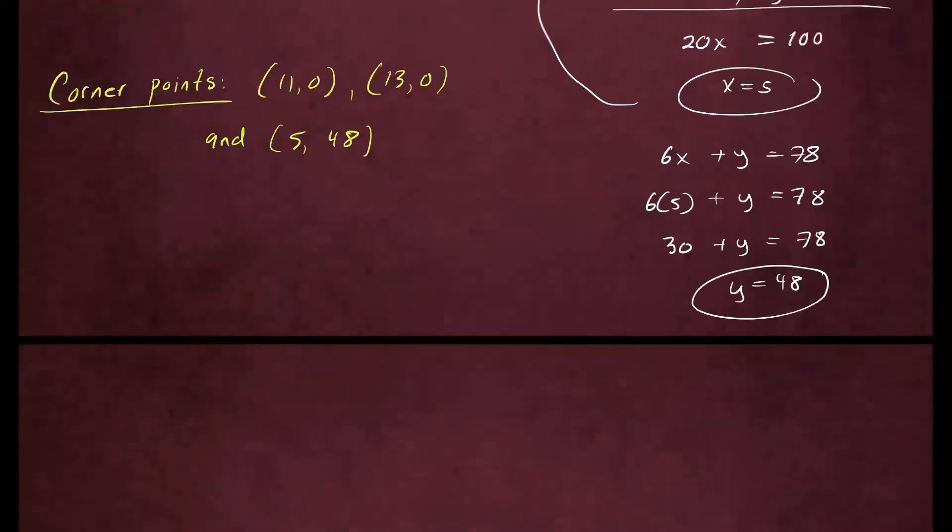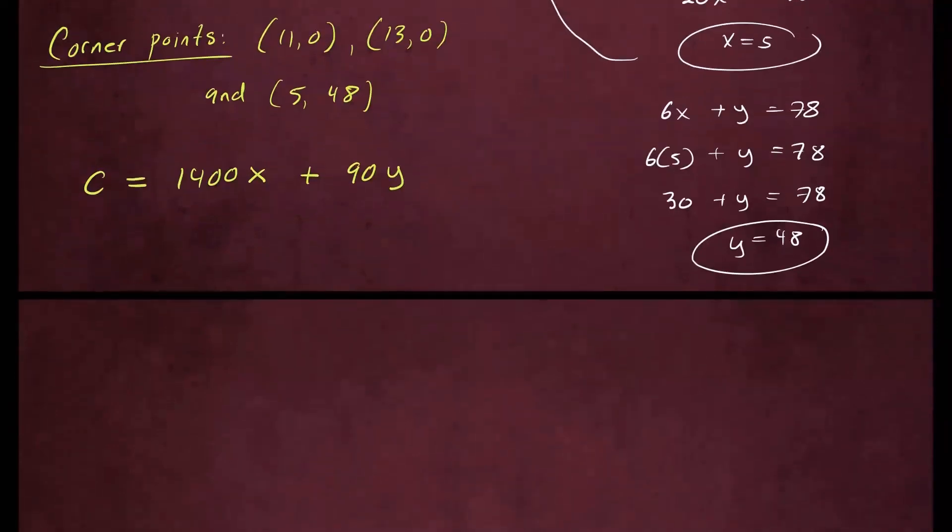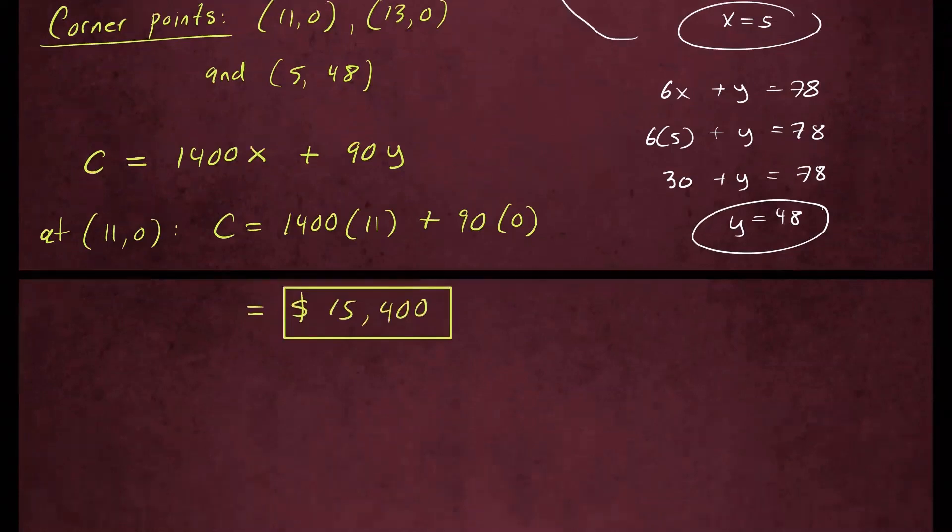So at (11, 0), the cost is going to be 1,400 times 11 plus 90 times 0. So that's going to give us about $15,400. So that's the cost if you were to rent 11 buses and 0 vans.